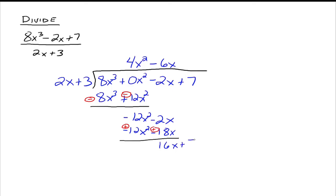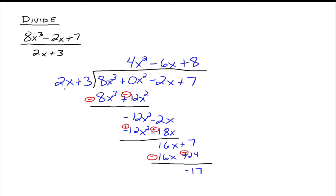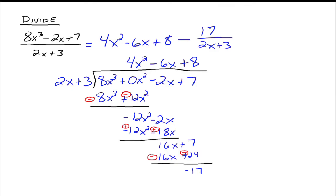Bring down the plus 7. The degree here is 1, which is the same as the degree of our divisor, so we keep going. What do we need to multiply 2x by to make it look exactly like 16x? That would be plus 8. So 8 times 2x is 16x, and 8 times 3 is 24. Change the signs: this becomes minus, this becomes minus. Add them up: the 16x's go away. Positive 7 and negative 24 gives you negative 17. The degree here is 0, which is less than the degree of our divisor, so we're done. So 8x cubed minus 2x plus 7 divided by 2x plus 3 equals 4x squared minus 6x plus 8, minus 17 over 2x plus 3.